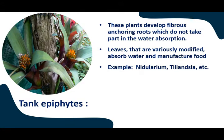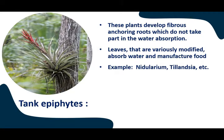The fourth type is the tank epiphyte. These plants develop fibrous anchoring roots which do not take part in water absorption. Leaves that are variously modified absorb water and manufacture food. Examples are Nidularium, Tillandsia, etc.